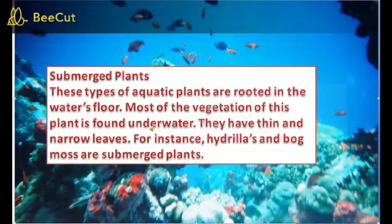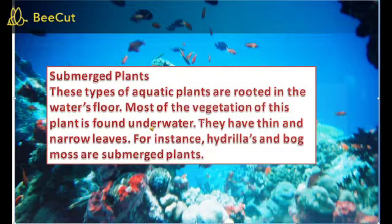This type of aquatic plant is rooted in the water floor. Most of the vegetation of these plants is from underwater. They have thin and narrow leaves. For instance, hydrolas and bog moths are submerged plants.